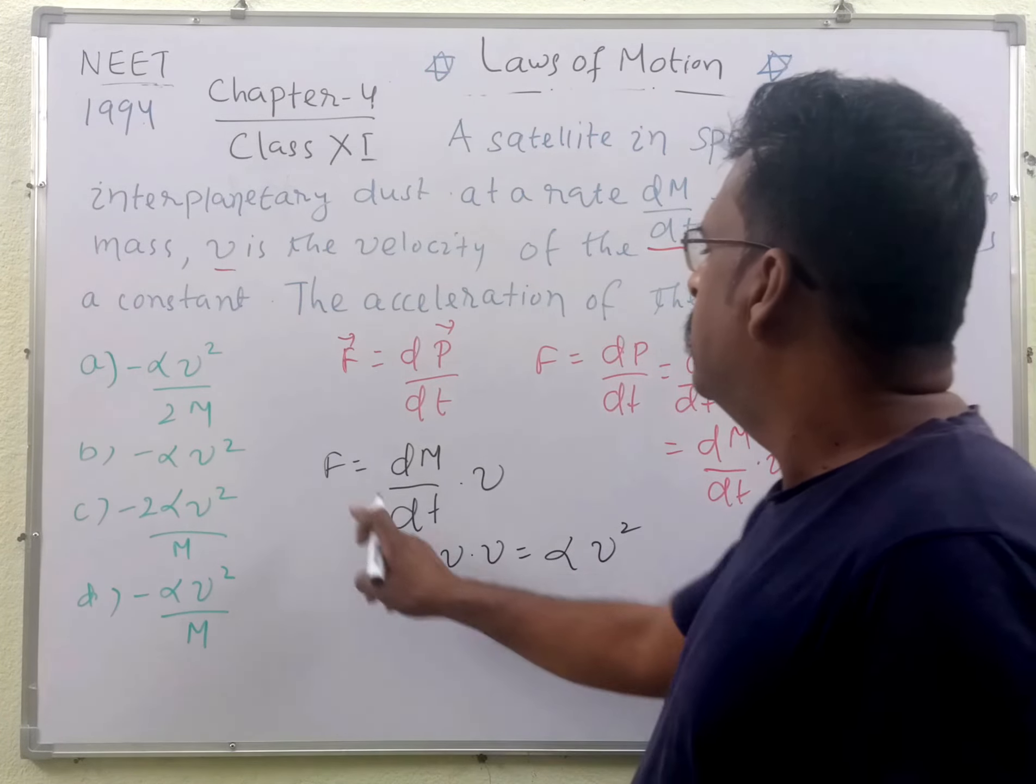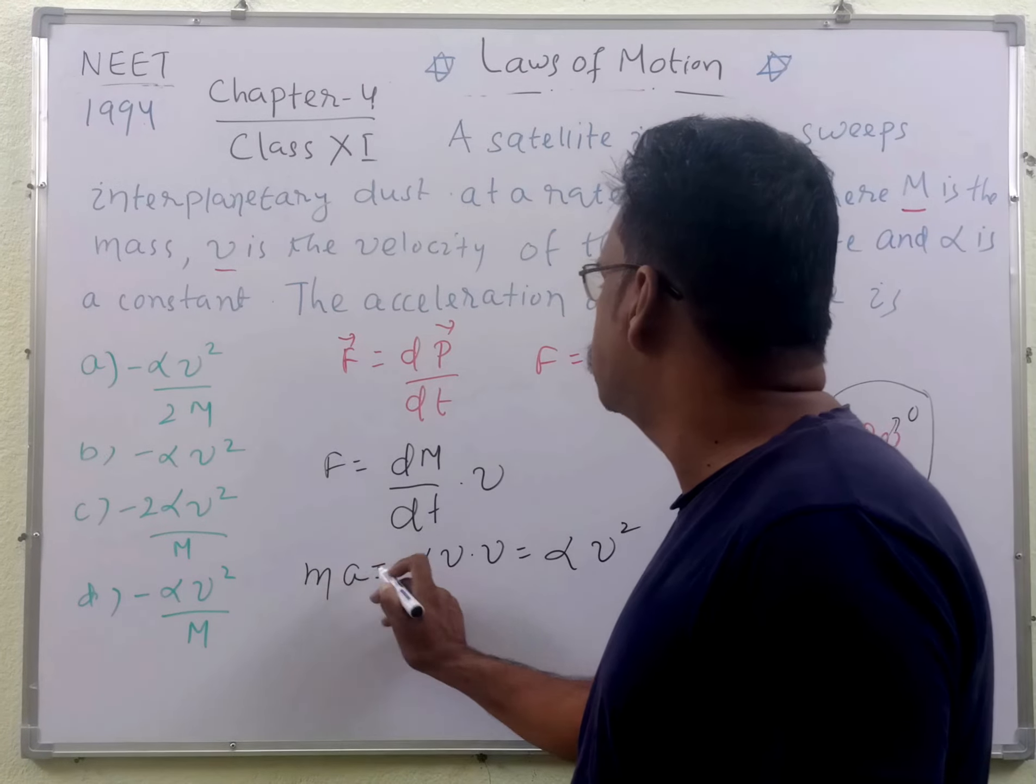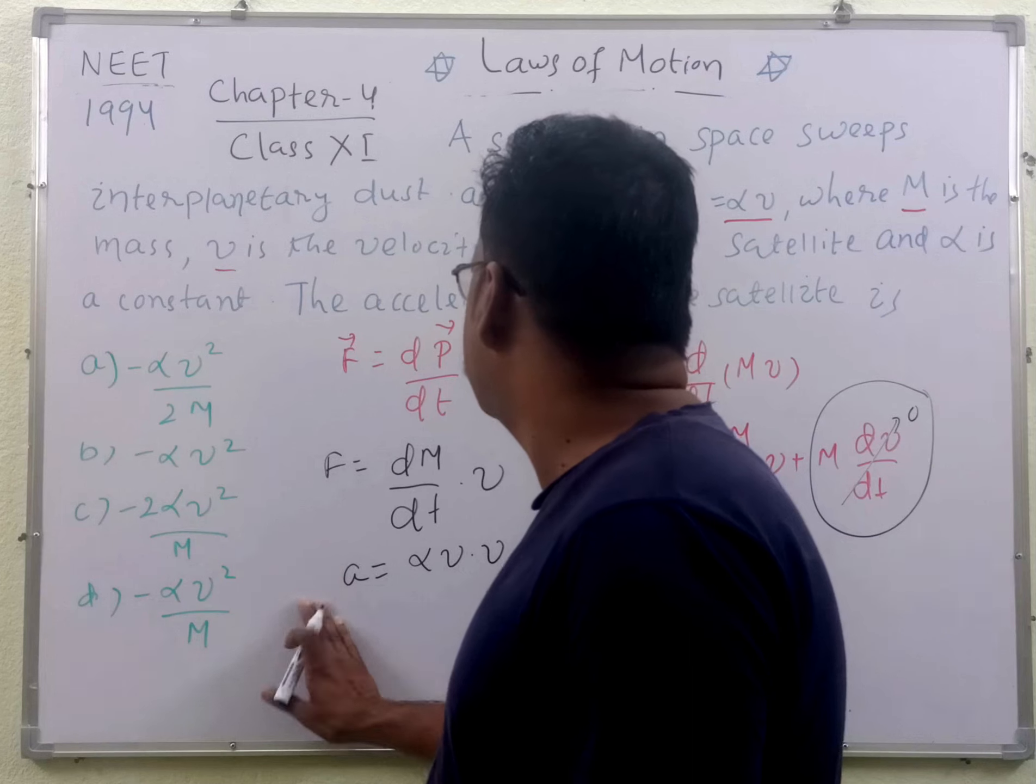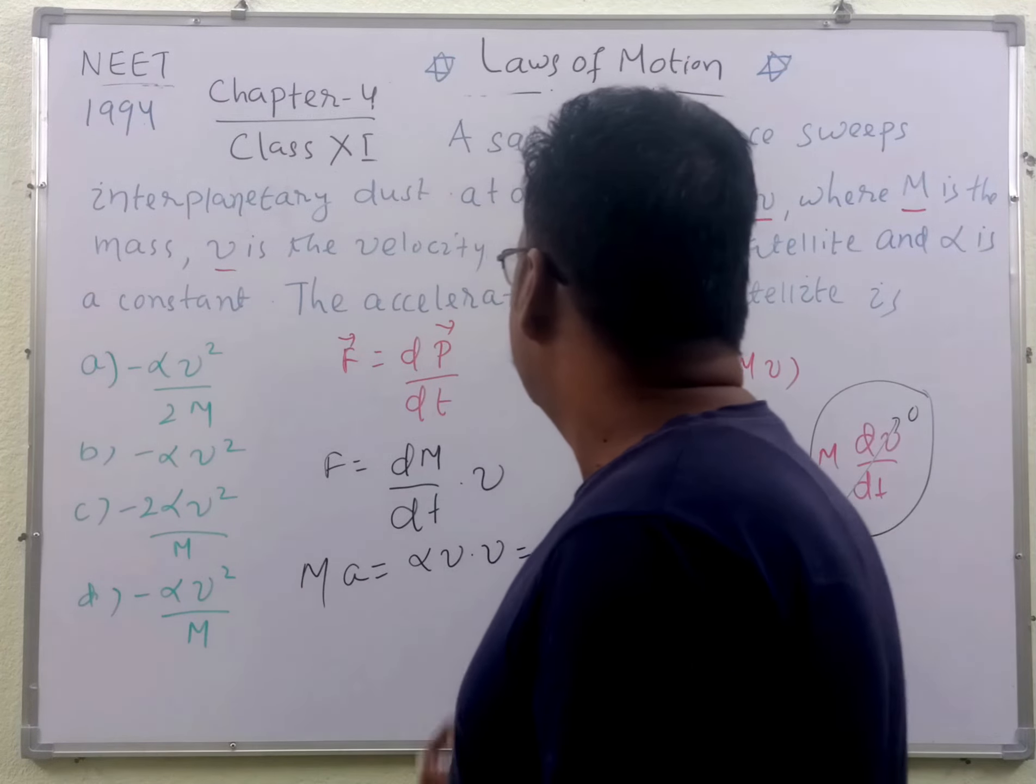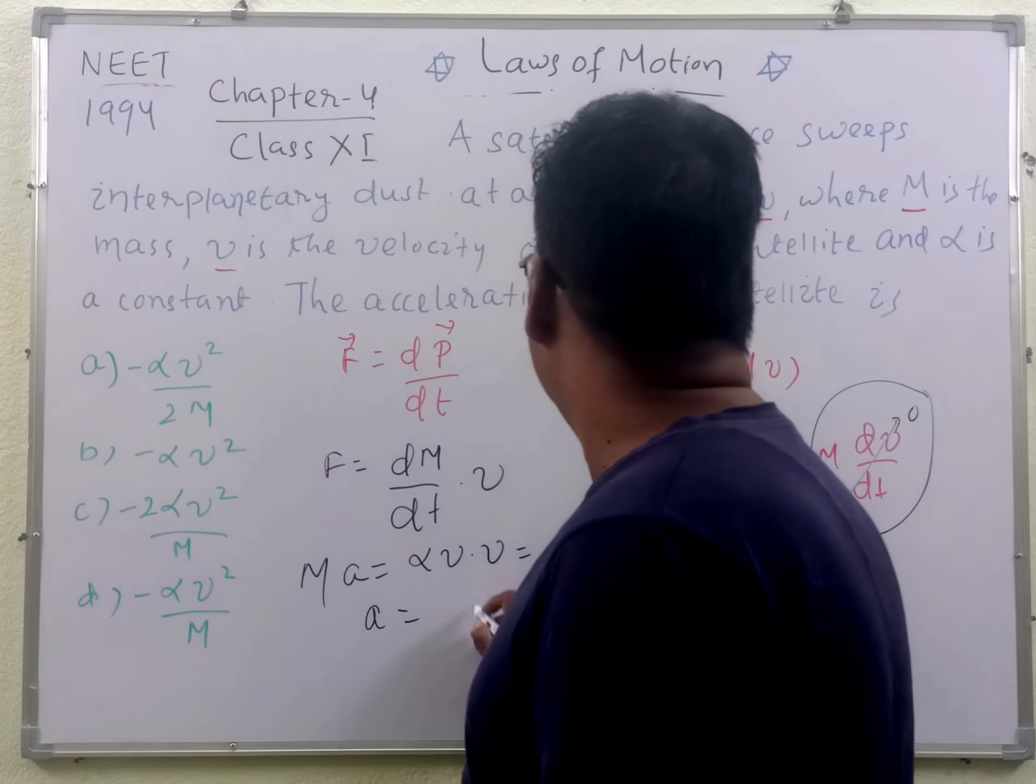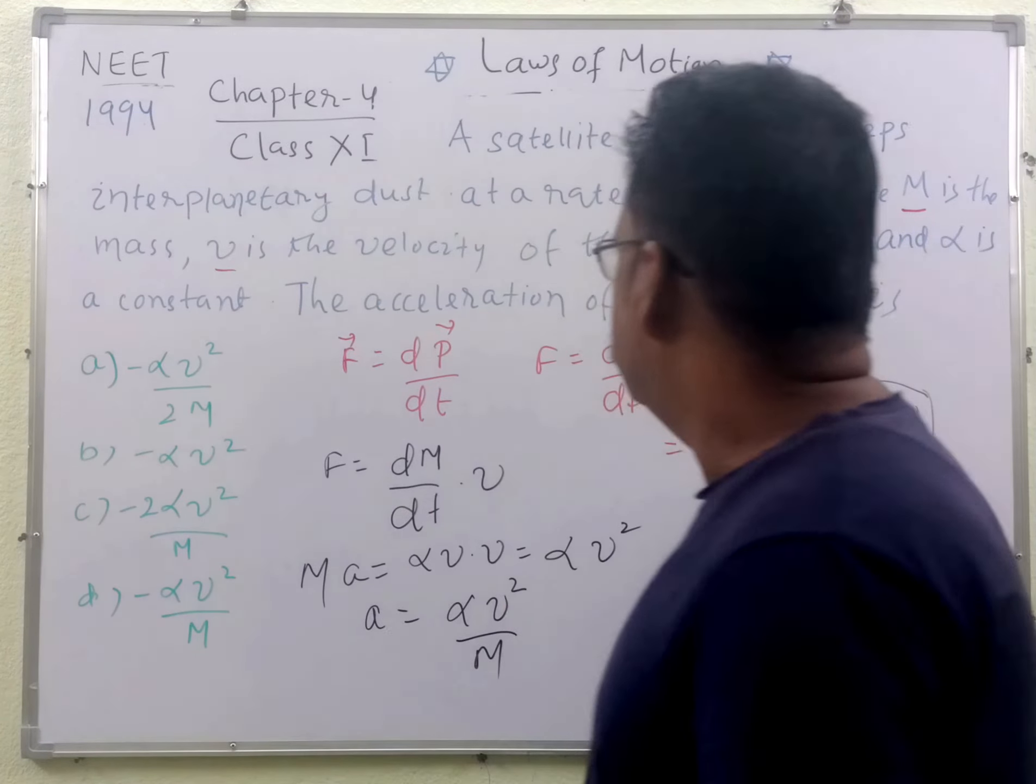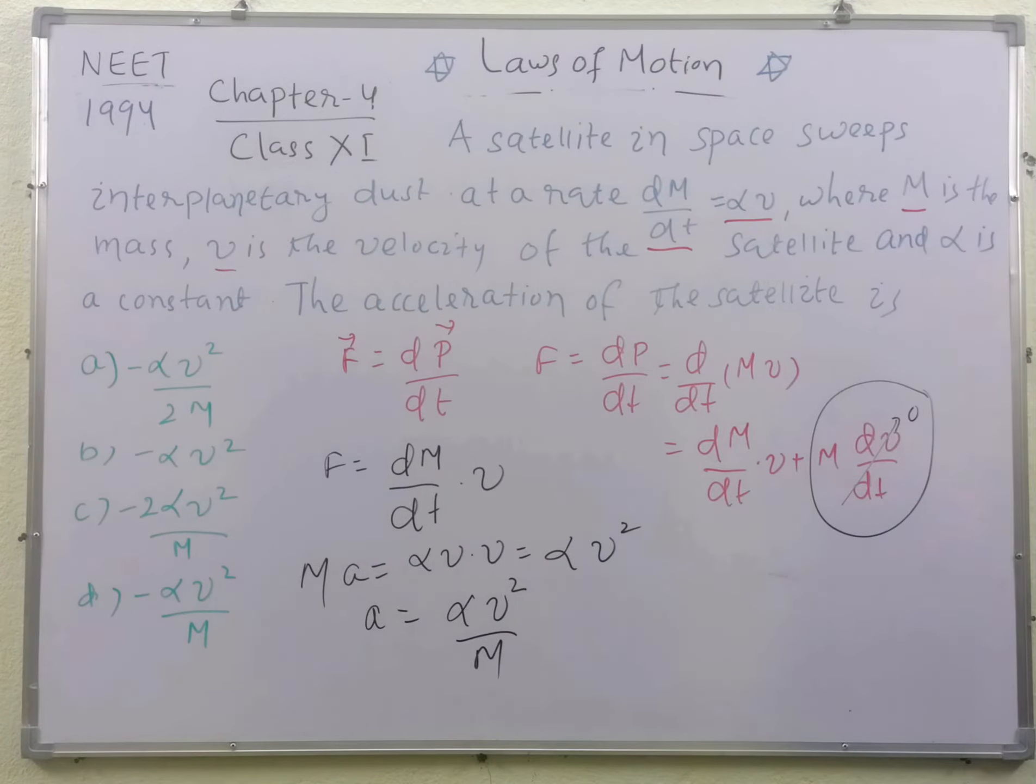And what is force? Force is mass times acceleration. Here the mass is capital M, so we will write acceleration equals αv²/M. This will be the acceleration of the interplanetary dust.